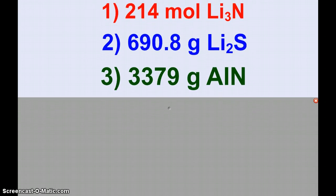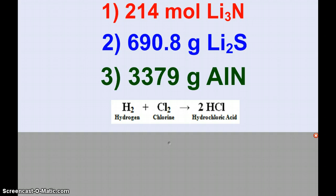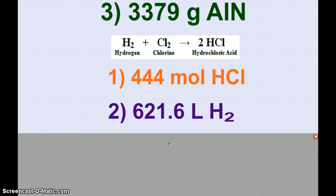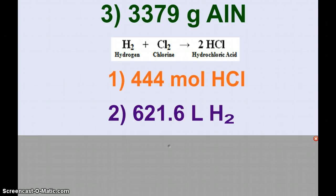For the next reaction with hydrogen and chlorine making hydrochloric acid, hydrogen and chlorine are gases, so we can involve the liter here, and so we have these two answers.